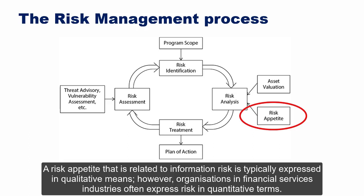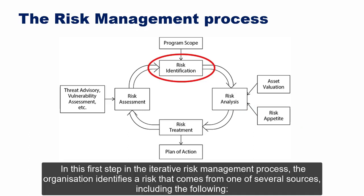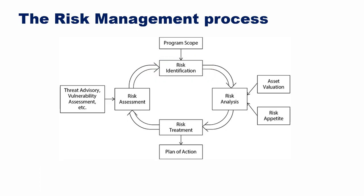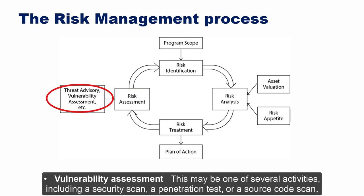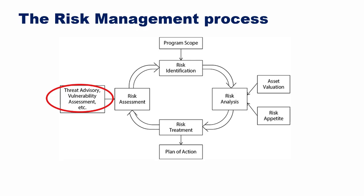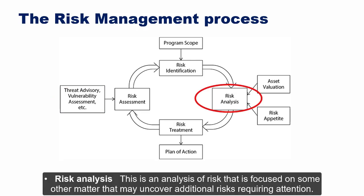In risk identification — the first step in the iterative risk management process — the organization identifies risk from several sources, including: risk assessments (overall or focused), vulnerability assessments (security scans, penetration tests, or source code scans), threat advisories (from product vendors, threat intelligence feeds, or news stories), and risk analysis focused on other matters that may uncover additional risks.